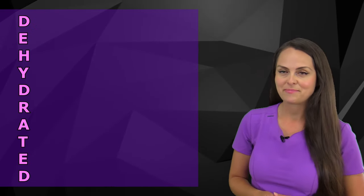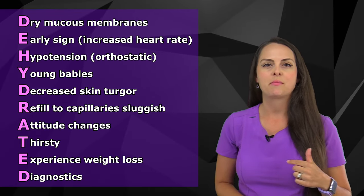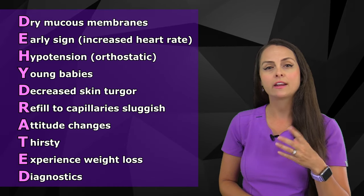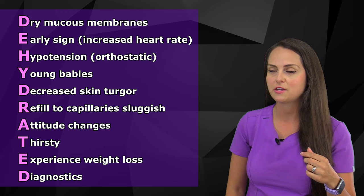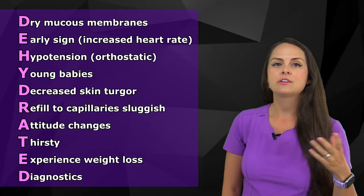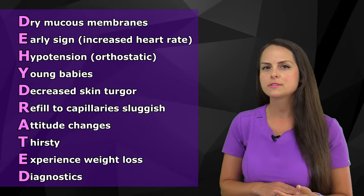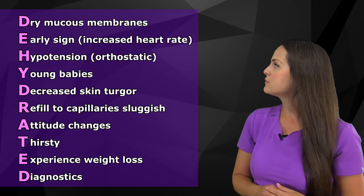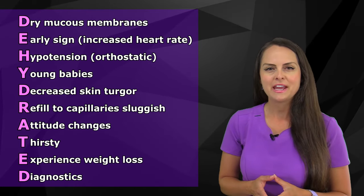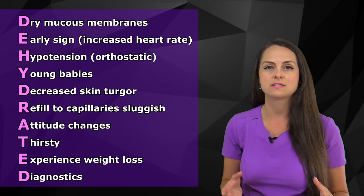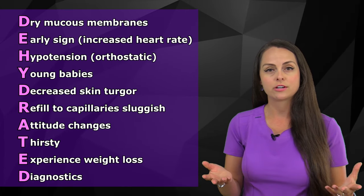Now let's talk about signs and symptoms in a patient with fluid volume deficit, using the mnemonic DEHYDRATED. D is for dry mucous membranes — sticky and very dry. E is for early sign: increased heart rate with a weak pulse. H is for hypotension — low blood pressure — because there's not enough fluid volume to pump throughout the system.